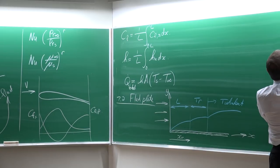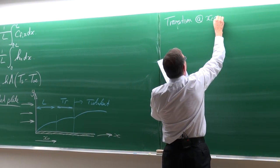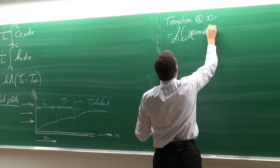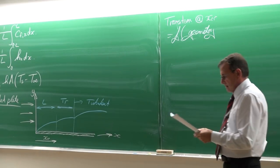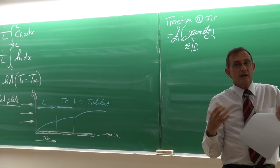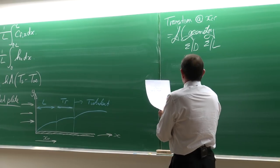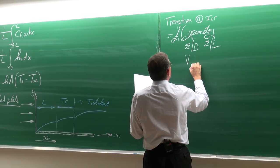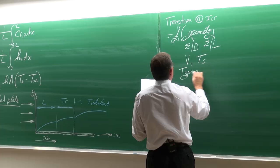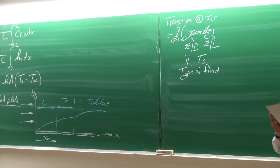The transition at x_CR is a function of the geometry of the object, the surface roughness epsilon divided by L, the velocity, the surface temperature, and the type of fluid. All those things influence where transition starts.